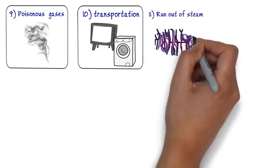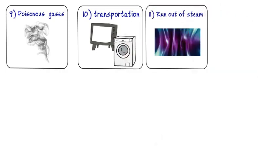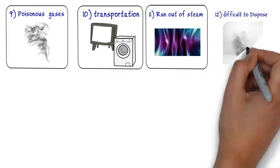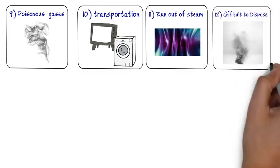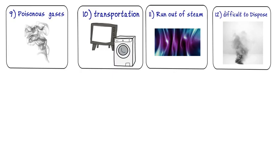Eleventh is, the source can be unreliable and run out of steam, perhaps two decades. Twelfth is, hazardous gases and minerals may come up from underground difficult to safely dispose of.